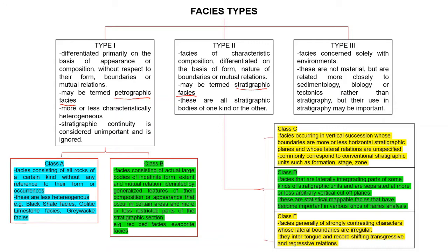Type two has been further divided into Class C, D, and E. Class C consists of facies occurring in vertical succession whose boundaries are more or less horizontal stratigraphic planes with unspecified lateral relations — conventional stratigraphic units like formation, stage, and zone. Class D facies are laterally integrating parts of some kind of stratigraphic facies, separated at more or less arbitrary vertical cutoff planes — these are statistically mappable facies important in facies analysis. Class C facies are generally of strongly contrasting characteristics whose lateral boundaries are irregular.